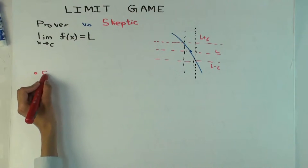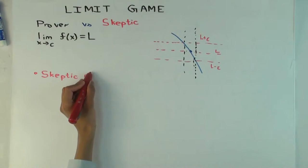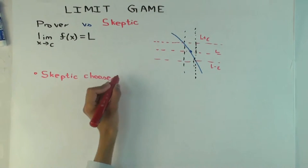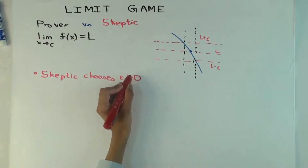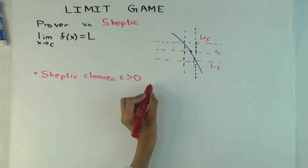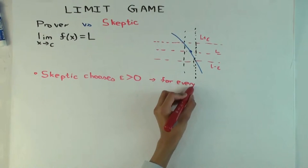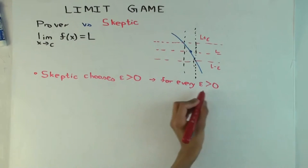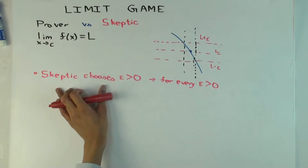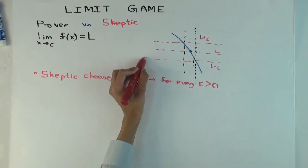We begin with the skeptic choosing epsilon greater than zero. This is the part of the definition which reads: for every epsilon greater than zero. That's the first clause of the definition — the skeptic is choosing epsilon greater than zero. What the skeptic is effectively doing by choosing epsilon is choosing the interval from l minus epsilon to l plus epsilon.